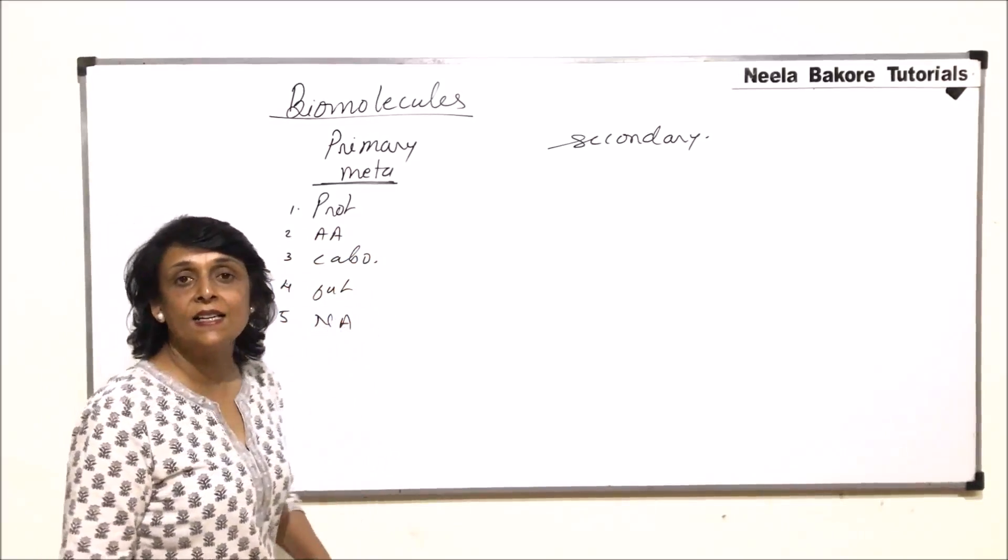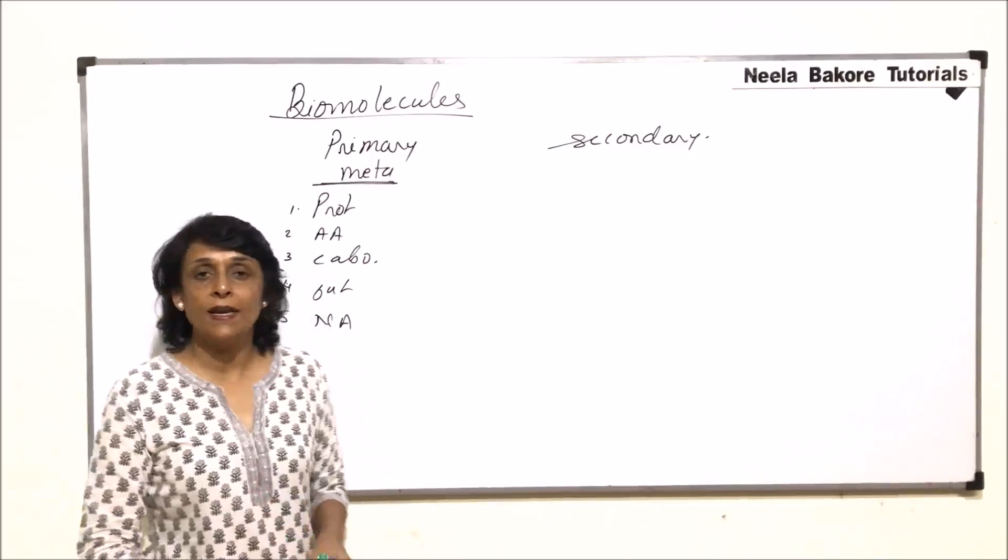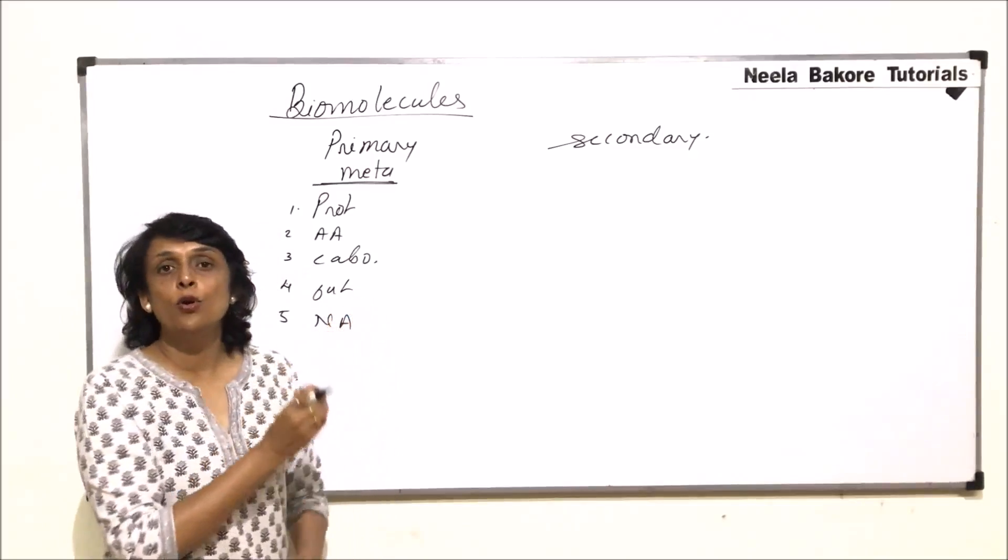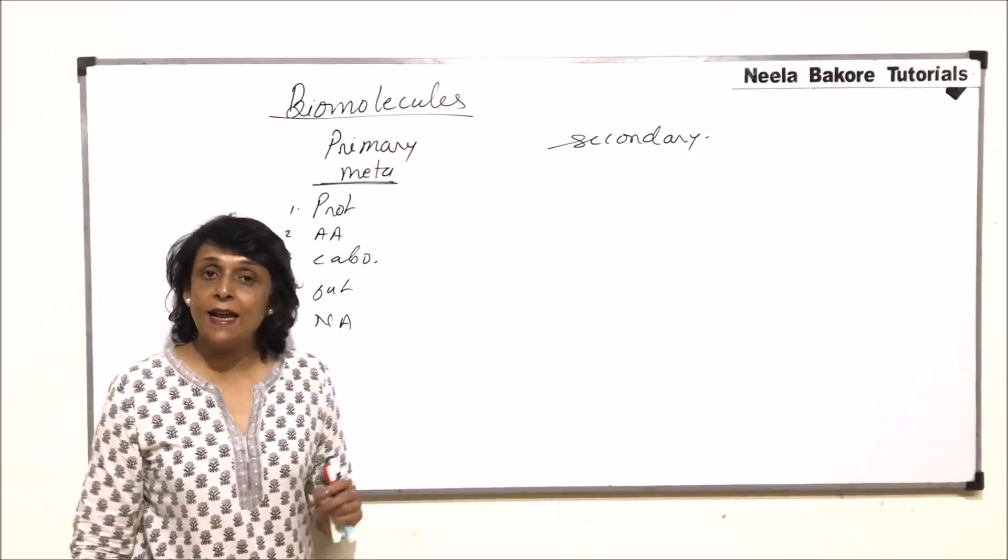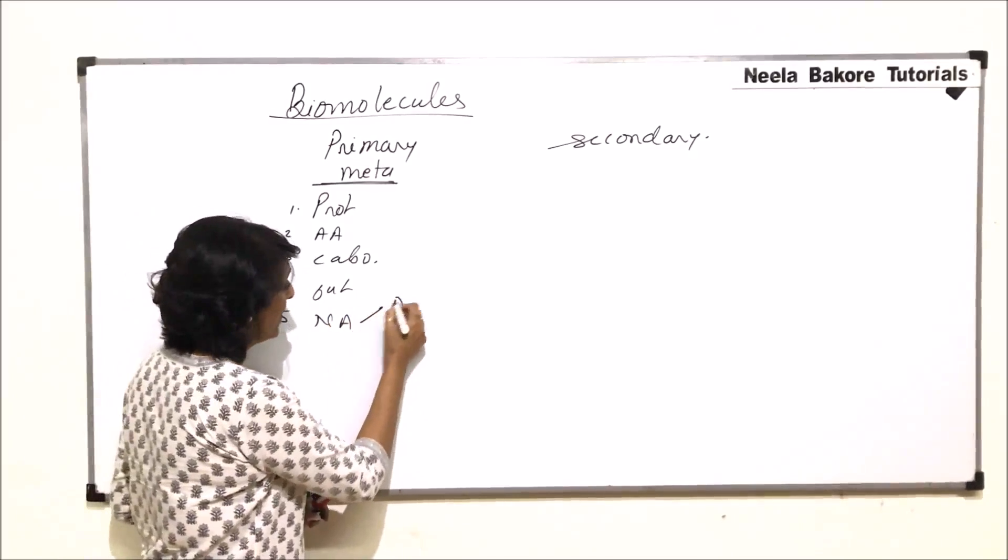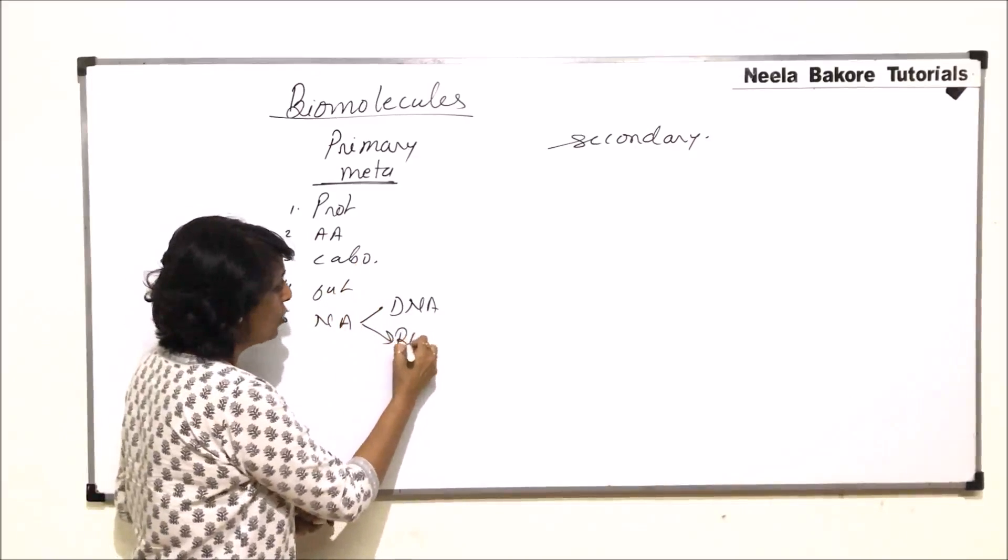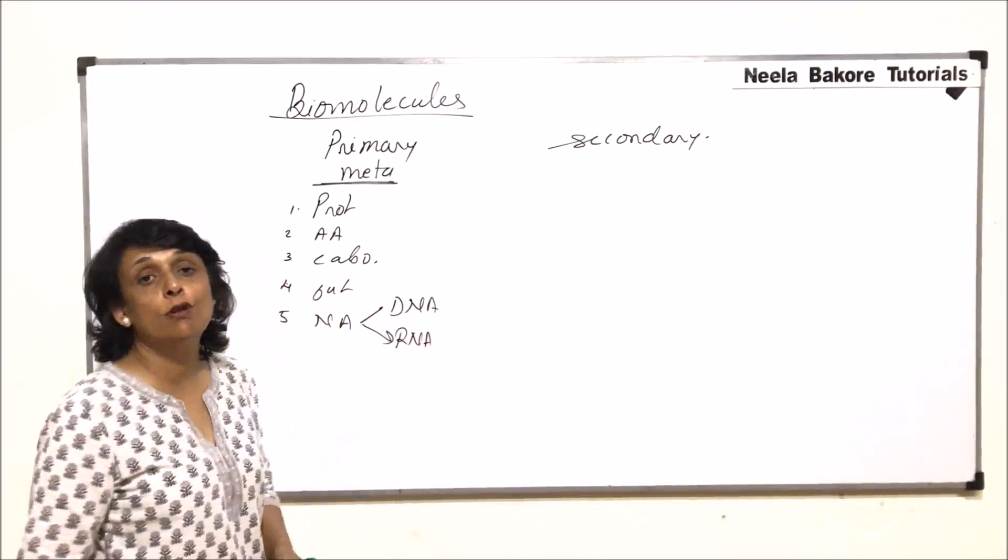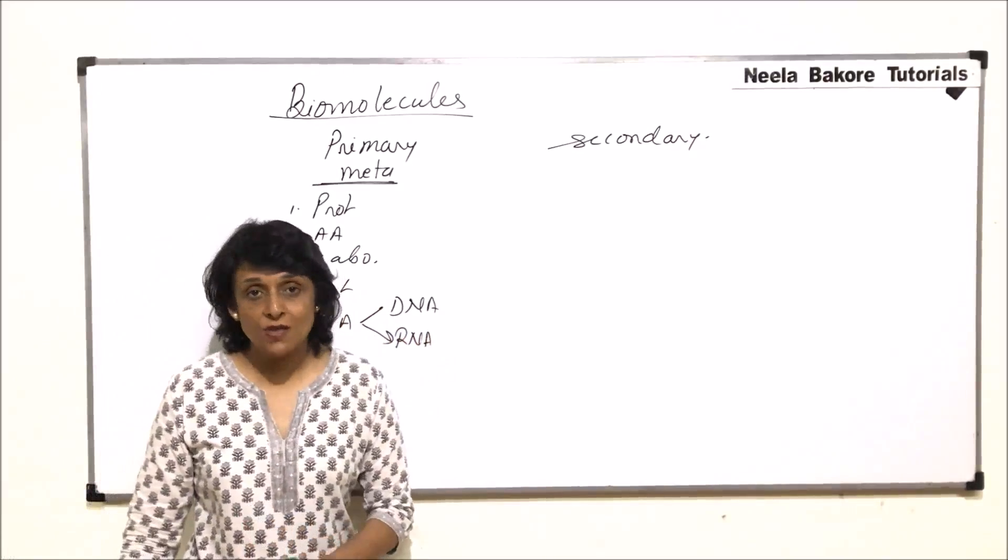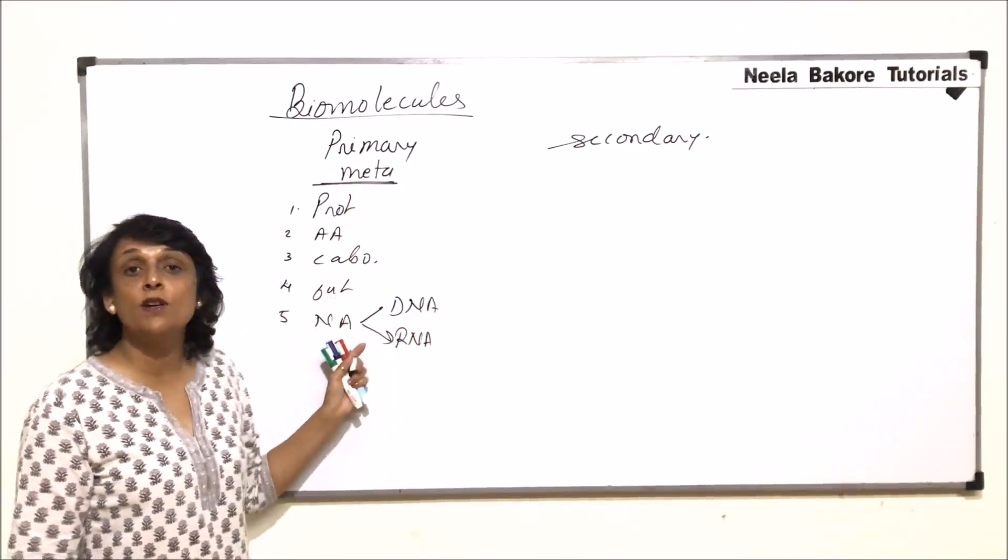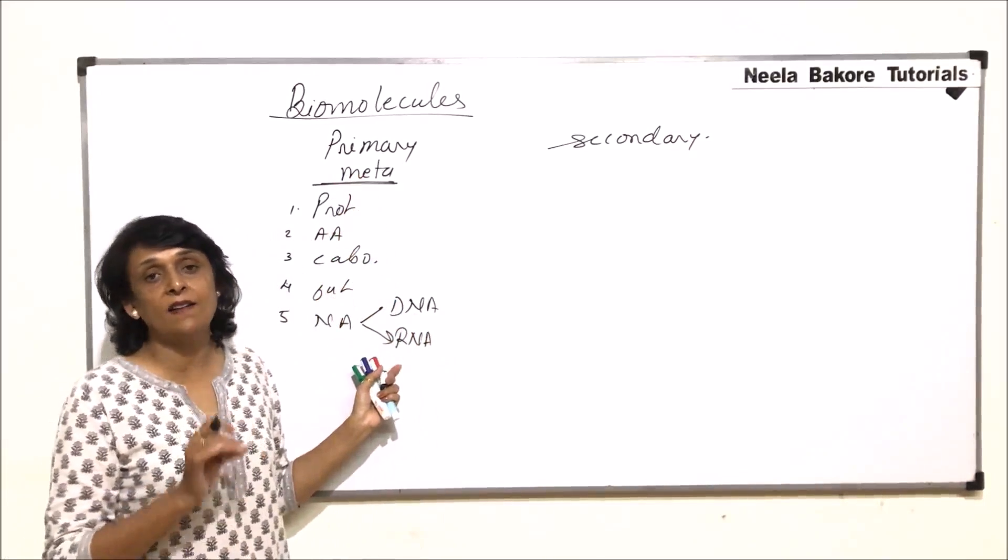These are considered as primary metabolites including their mono units. When we are talking of nucleic acids, that is DNA and RNA, primary metabolites would also include nucleotides and nucleosides. All these because their functions are very clearly understood.